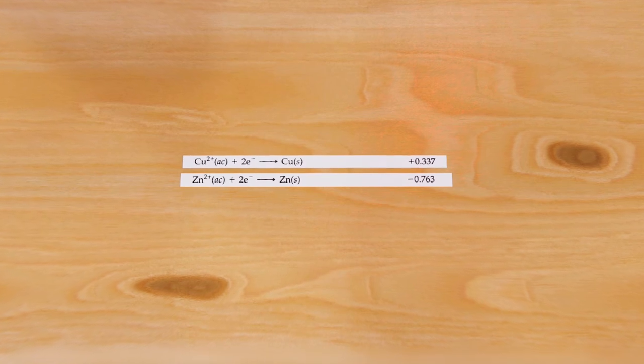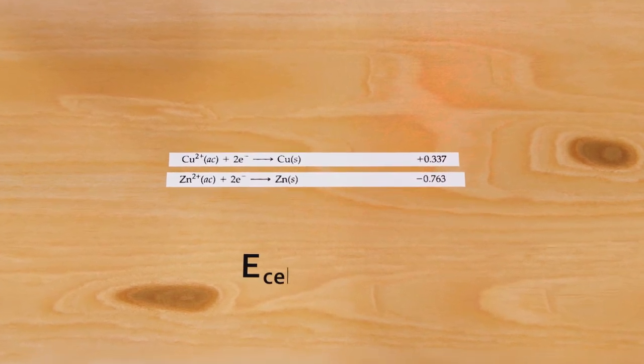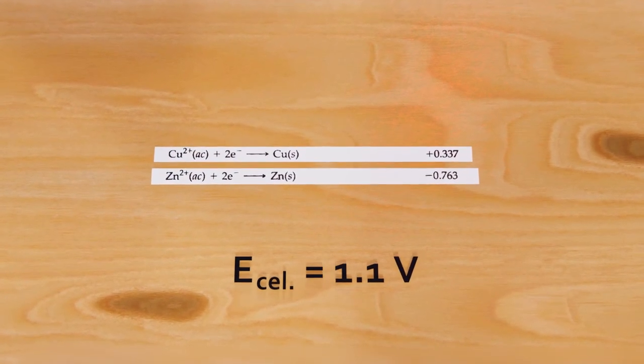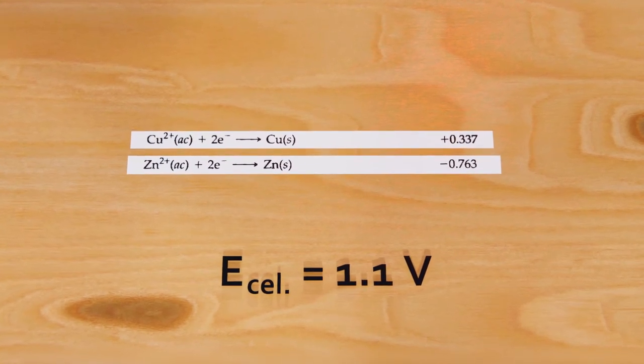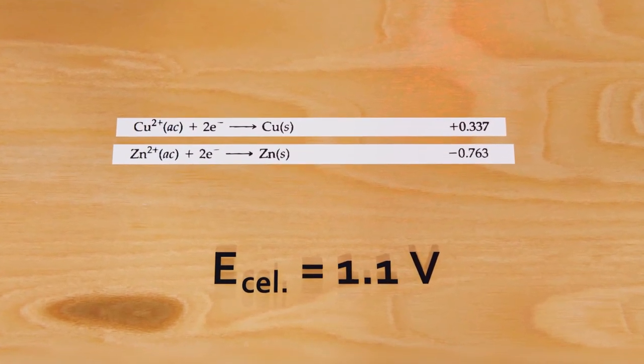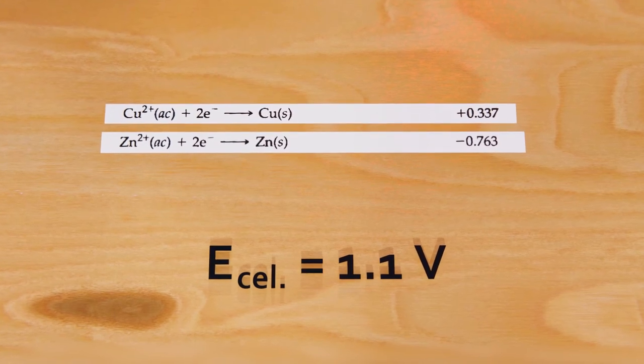But that's not all. Since we know the standard reduction potential of the two half-cells, we can calculate the theoretical voltage that the whole cell would give us—of course, provided they meet standard conditions, which does not usually happen, but at least we have a benchmark. Basically, no matter the materials used in the redox reaction.